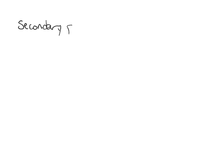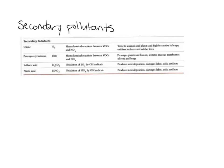Secondary pollutants used to be primary pollutants but undergo some kind of transformation in the presence of sunlight, water, oxygen, or other compounds, and become something else. Ozone is on the list of secondary pollutants and is the one criteria pollutant that is a secondary pollutant. We also have peroxylacetyl nitrates (PAN). Ozone comes from the reaction between VOCs and nitrogen oxides.